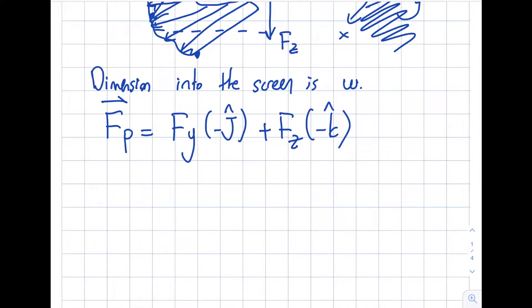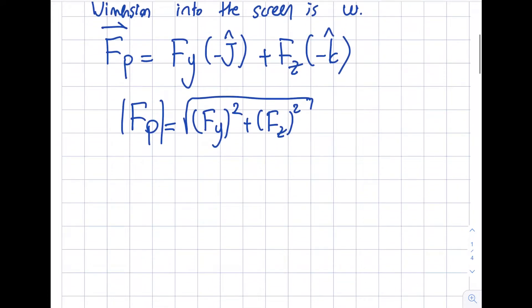You can notice here that my combined FP from the magnitude standpoint will be square root of FY squared plus FZ squared. It's very similar to your statics courses. Anyways, approach them one by one. Let me start by the easier one and the easier one will be the vertical. So let's start by that.